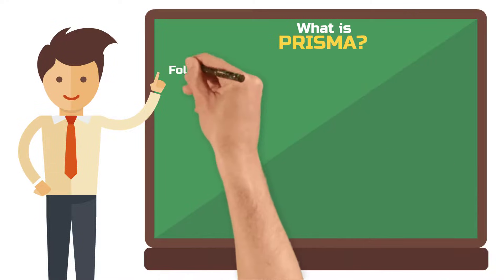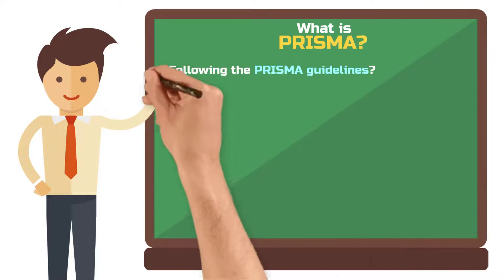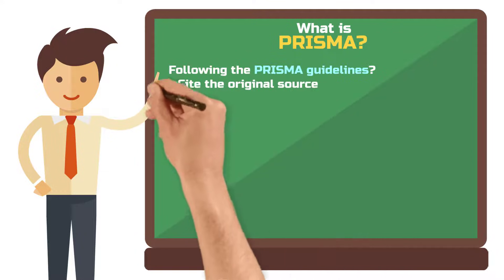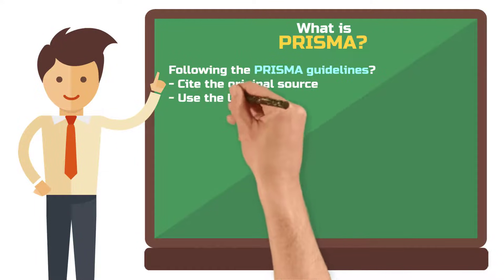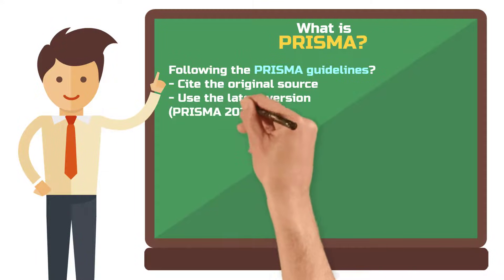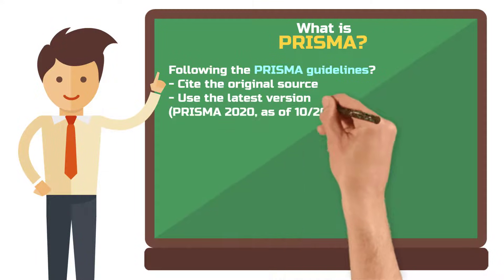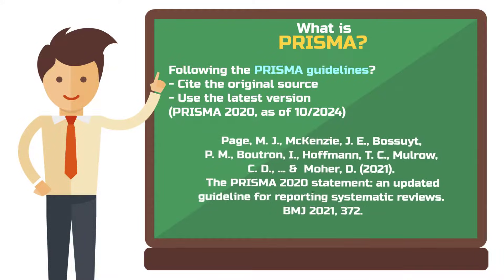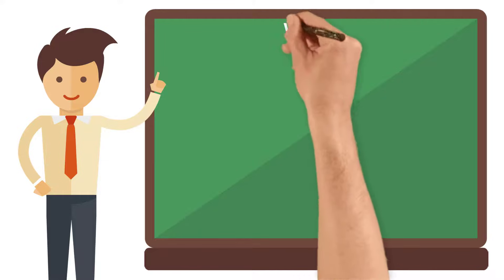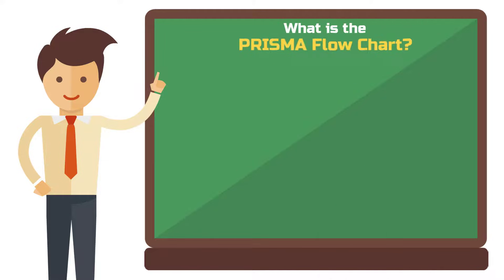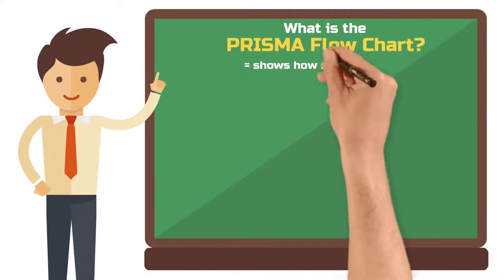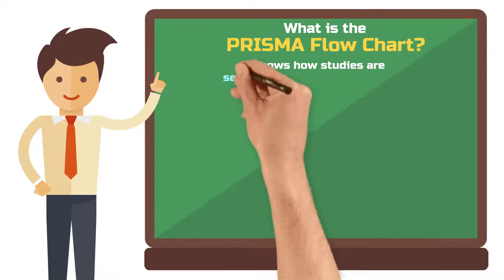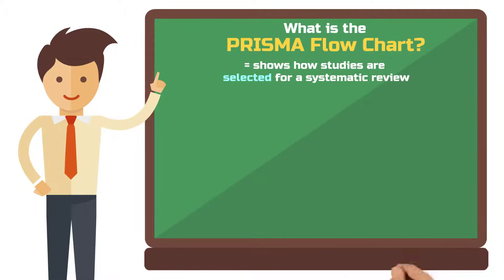When following the PRISMA guidelines, always make sure to cite the original source that contains the most recent version of the guide. The current version is called PRISMA 2020. The PRISMA flowchart, also sometimes called the PRISMA diagram, is a chart that shows how studies are selected for a systematic review.